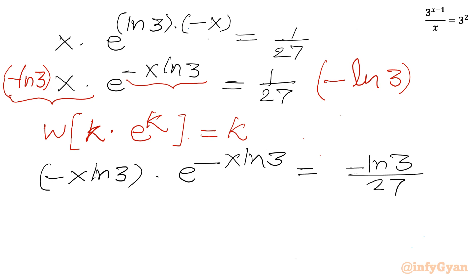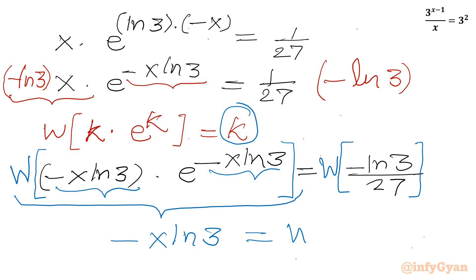Now I have to consider Lambert W function both sides. So Lambert W function for the left hand side and Lambert W function for the right hand side also. Now left hand side, this whole side I can write is k, so it is equal to this value. So I will be writing minus x ln 3 equals Lambert W function of minus ln 3 divided by 27.